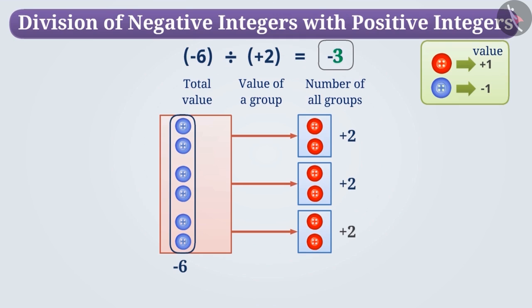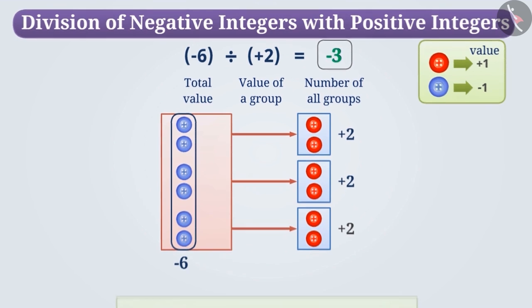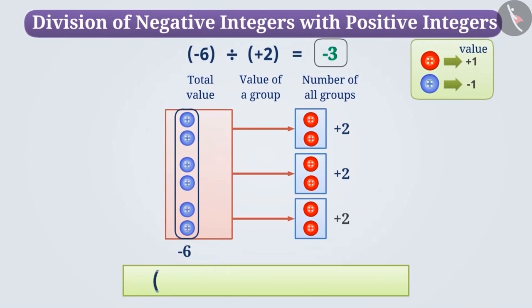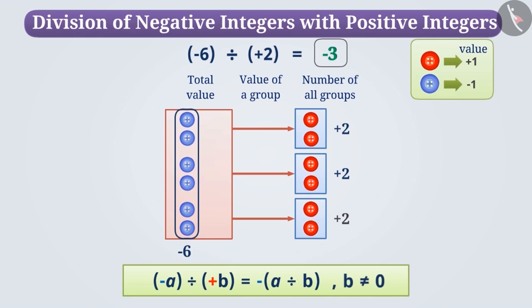Here the three shows three groups and the minus sign shows the action of subtraction. In broad terms, we can say that the quotient obtained by dividing a negative integer by a positive integer is negative. Your divisor cannot be zero.